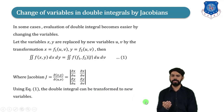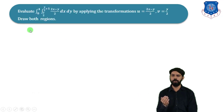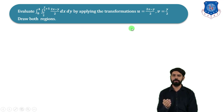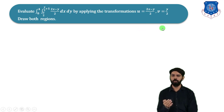We will now discuss an example: evaluate the integral from 0 to 4 of the integral from y/2 to y/2 + 1 of (2x − y)/2 dx dy, by applying the transformation u = (2x − y)/2 and v = y/2, and draw both regions.